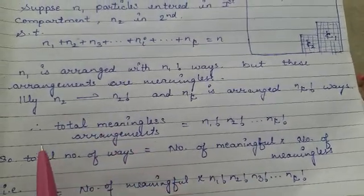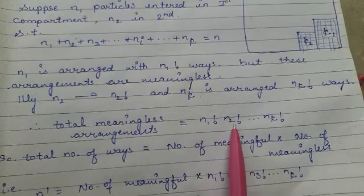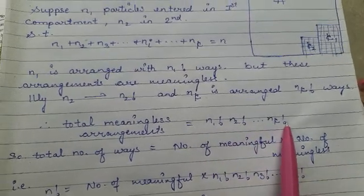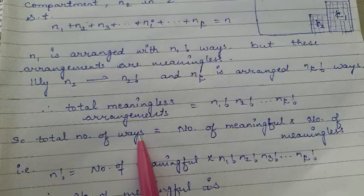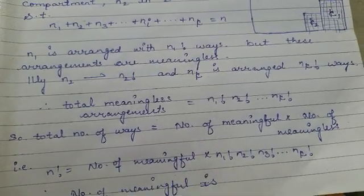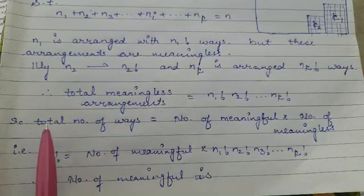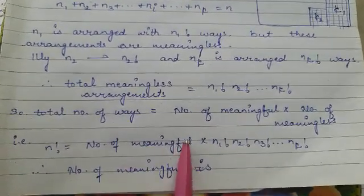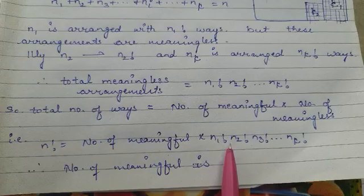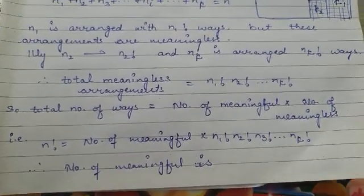So the total number of meaningless arrangements uses N1 factorial, N2 factorial, and so on for each compartment.